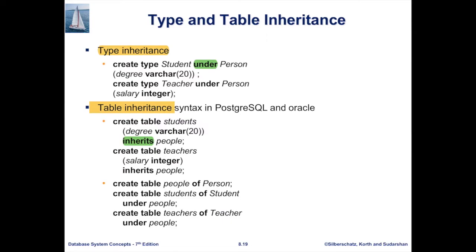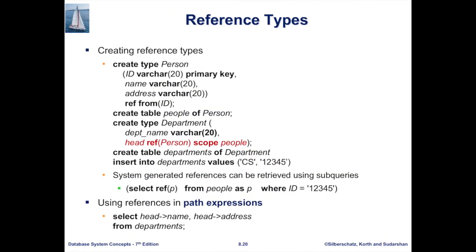There are two sub-items under table inheritance. The first is for PostgreSQL, which defines inheritance in its own way. The second is using SQL 1999, where we need to specify the object to which the table is mapped: 'CREATE TABLE people OF OBJECT TYPE person', 'CREATE TABLE students OF OBJECT TYPE student UNDER people' to specify that all attributes of people are also in students, and similarly for teachers.